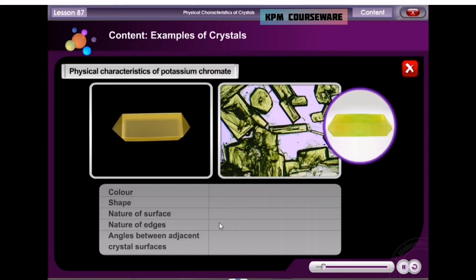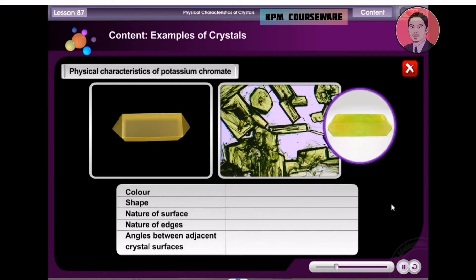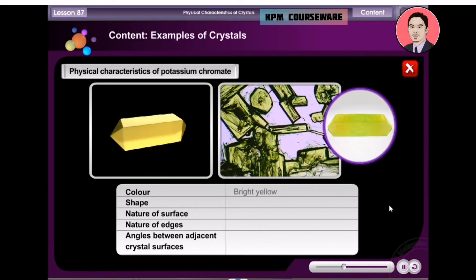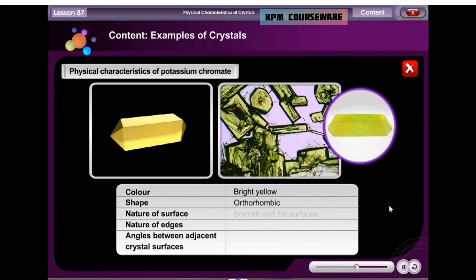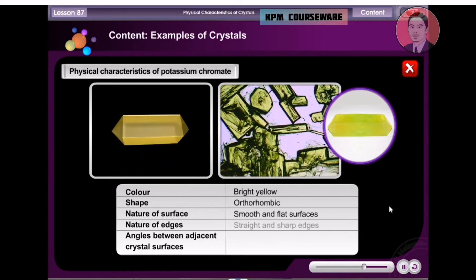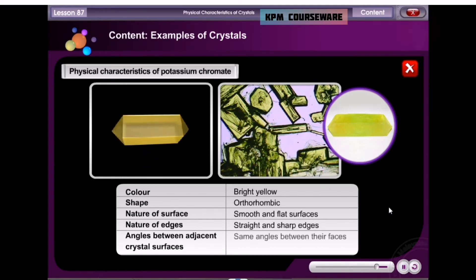This is a potassium chromate crystal. Let us have a closer look at the crystal. The potassium chromate crystal is bright yellow in colour. It has a rhombic shape. The surfaces are smooth and flat. The edges are straight and sharp. The potassium chromate crystal has the same angles between their faces.